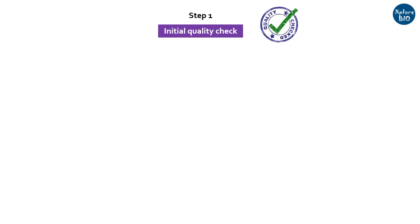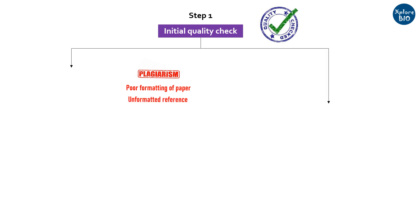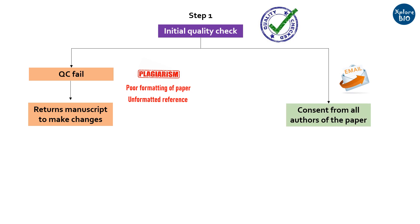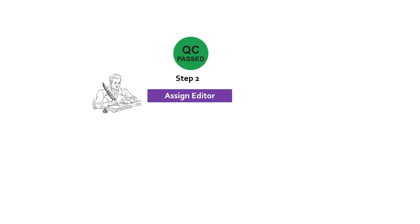After submission, the journal will perform an initial quality check in which they check for plagiarism, basic formatting, manuscript length, references, and so on. If they find any of these issues, they return the manuscript and ask you to fix them. The journal sometimes also sends an email to all the authors to get their consent for the submitted paper to be published. If everything is okay, an editor is assigned to your paper.